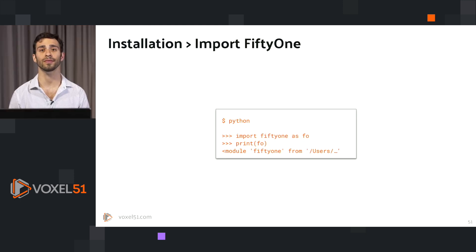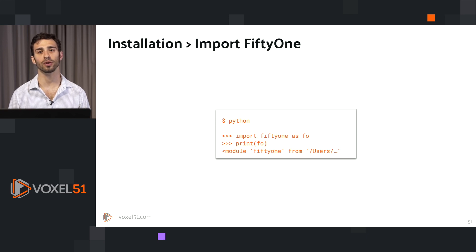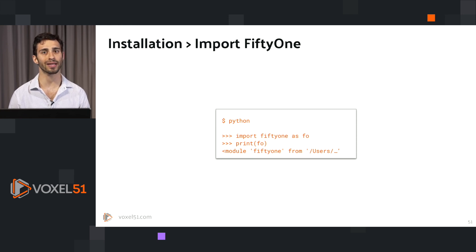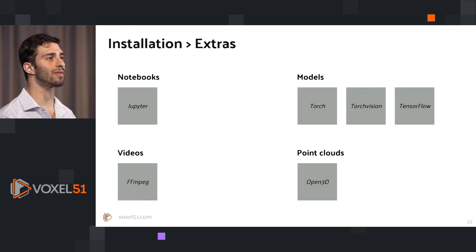Once you've done that, you can check that your installation was successful by opening a Python process and then importing FiftyOne. We recommend using the alias `fo` to refer to FiftyOne, otherwise things can get a little cumbersome. So if you run `import fiftyone as fo` and then `print(fo)` and you get output without an error, it's likely that you did it the right way.